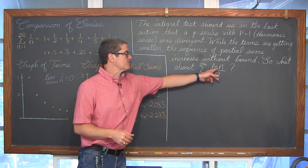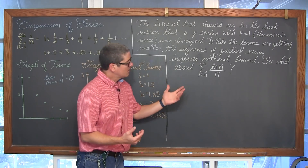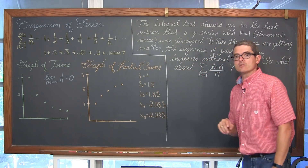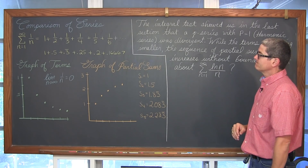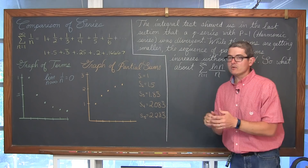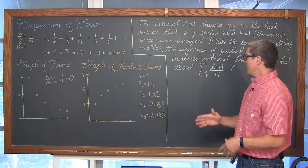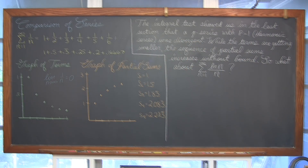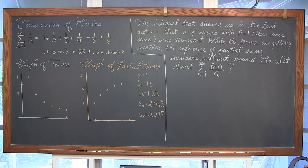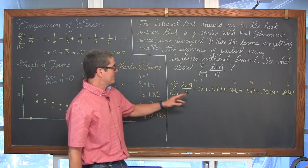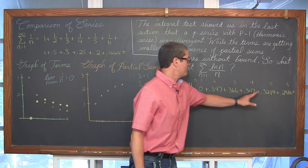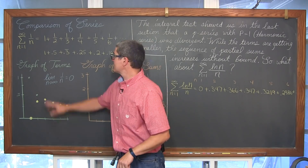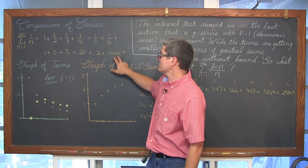So what about the series of natural log of n over n? One way to determine whether this series converges or diverges is to compare it to the harmonic series. With the direct comparison test, we want to look at how the terms in this series compare with the terms in the harmonic series. I'm letting n be 1, 2, 3, 4, 5, extending on forever.